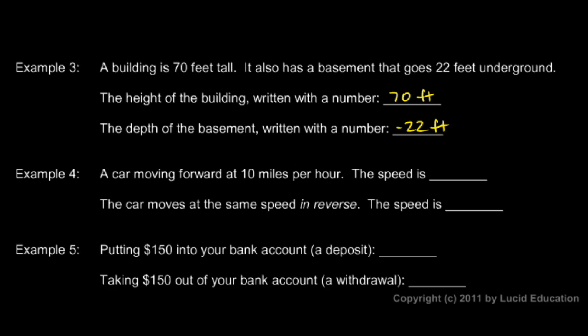A similar concept shows up when dealing with motion. In this case, we're talking about velocity. A car moves forward at 10 miles per hour. I prefer to write it like this: MI for miles over hour. So, 10 miles per hour is the speed of the car moving forward. If we represent forward motion with a positive number, then it makes sense to represent backward or reverse motion with a negative number. So, the car moving at the same speed in reverse would be going at negative 10 miles per hour.